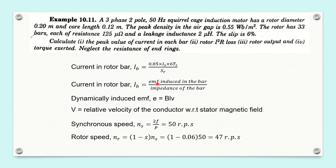Now, how can we calculate the EMF induced in the bar? All of us are aware of the principle of operation of an induction motor. An EMF is induced in the rotor conductors due to the relative velocity between the stator magnetic field and the rotor. So the EMF induced in the rotor is a dynamically induced EMF, due to the relative velocity between the stator magnetic field and the rotor. We know the equation for the dynamically induced EMF.